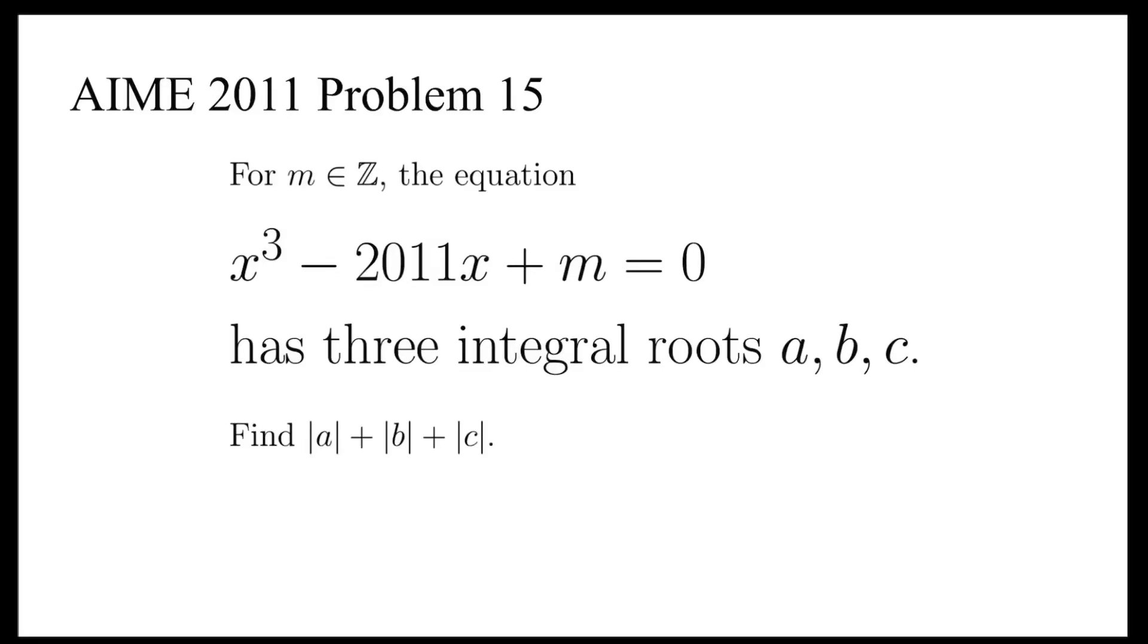Let's take a look at the last problem of AIME 2011. For an integer m, the equation x cubed minus 2011x plus m equals zero has three integral roots a, b, and c. Find the absolute value of a plus the absolute value of b plus the absolute value of c.